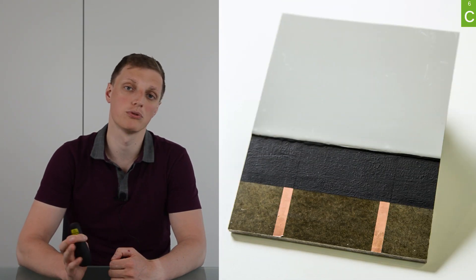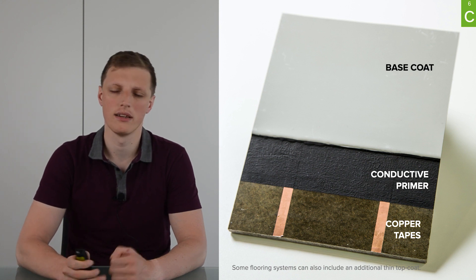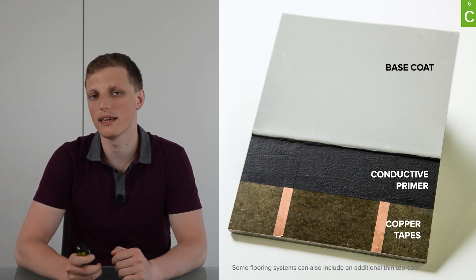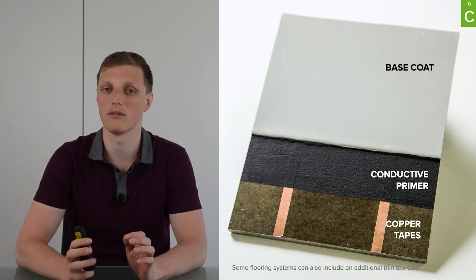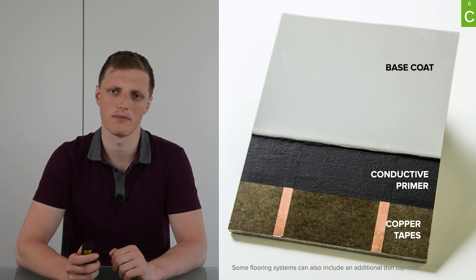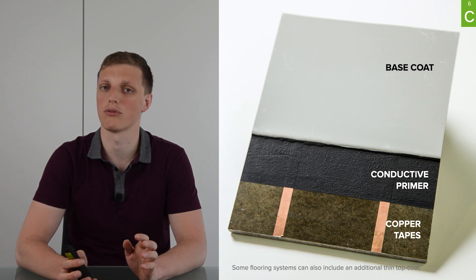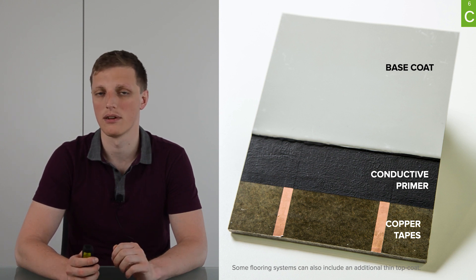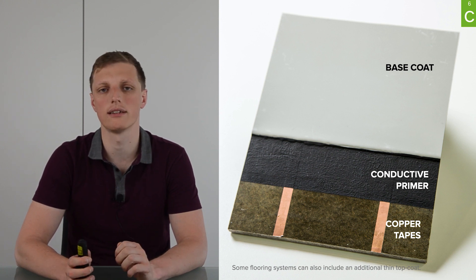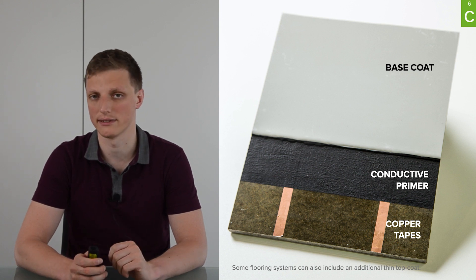Let me briefly remind you of the structure of antistatic floors. From bottom to top we have the base coat type, conductive primer, and base coat. In some specific cases an additional layer — called the top coat — can also be applied. There are many different regulations for antistatic requirements, but we can highlight the two most common: surface-to-surface and surface-to-ground resistance.